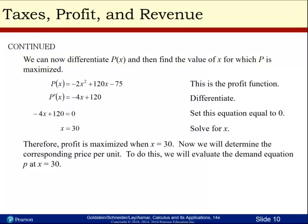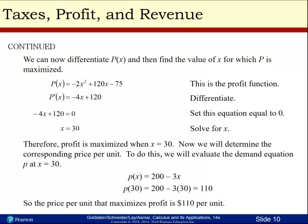Now we're going to determine the corresponding price per unit. To do this, we'll evaluate the demand equation p at x equal 30. So we just plug that in. We have p of x equals 200 minus 3x. Just plug in that 30, and we get that p of 30 equals 110. That means that the price per unit that maximizes profit is $110 per unit.